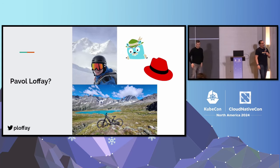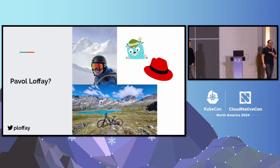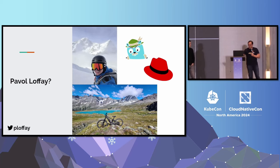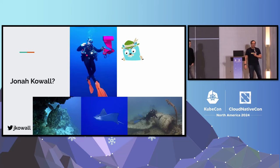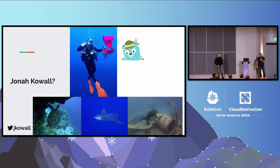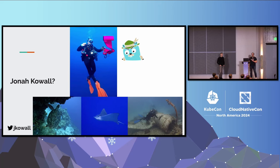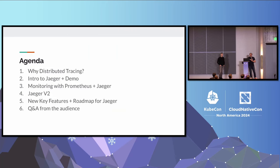My name is Jonah Cowell. My day job is I run product for a company called Pessler that's in the monitoring space. You might have heard of PRTG - it's been around for a long time. In my open source work, besides working on Jaeger, I also work on OpenSearch. I'm part of the steering committee and was part of bringing that into the Linux Foundation. Opposite of Pavel, I spend my time underwater, living down in Florida.